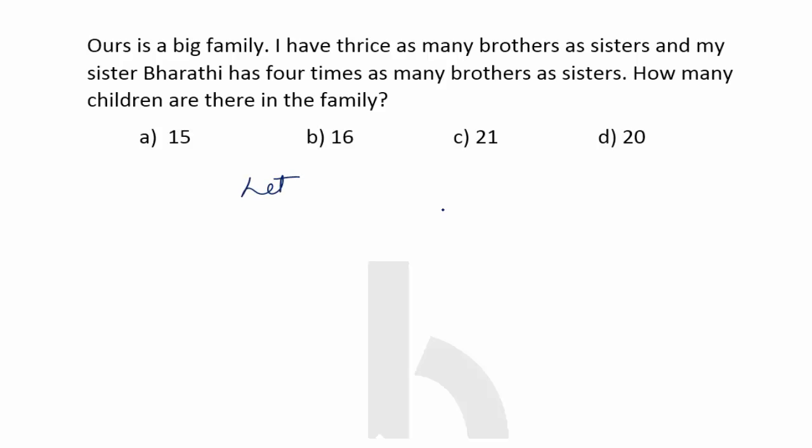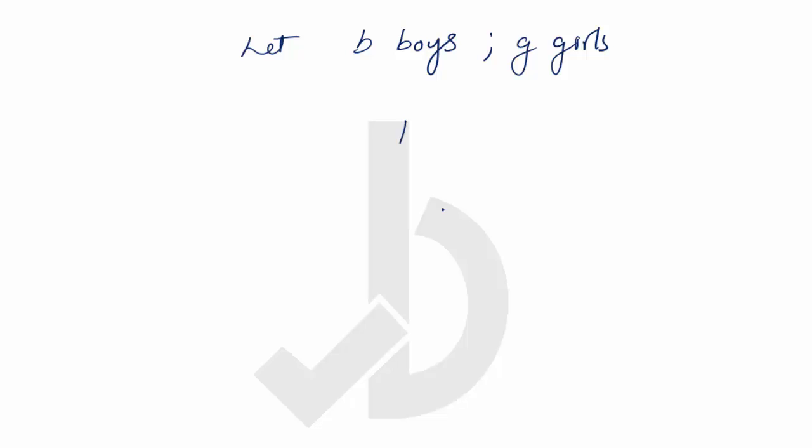Let's say there are B boys and G girls. For each boy, there are B-1 brothers and G sisters, whereas each girl in the family has B brothers and G-1 sisters. Now let me take you to the question.